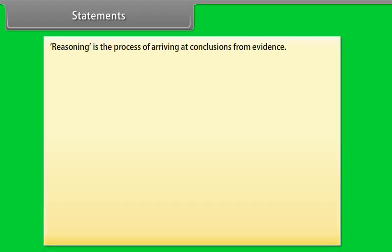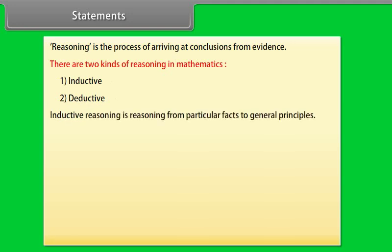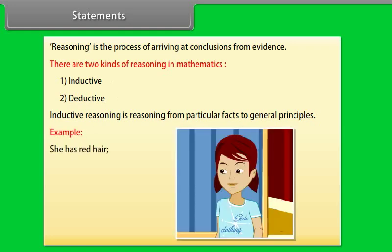Reasoning is the process of arriving at conclusions from evidence. There are two kinds of reasoning in mathematics: inductive and deductive. Inductive reasoning is reasoning from particular facts to general principles. For example: she has red hair, therefore she has a temper.